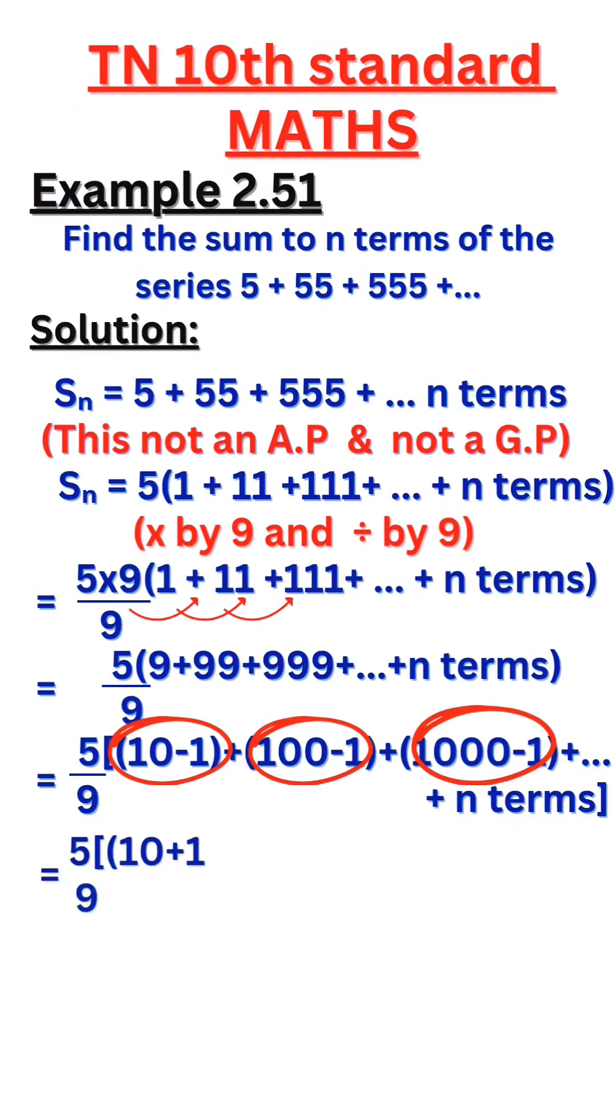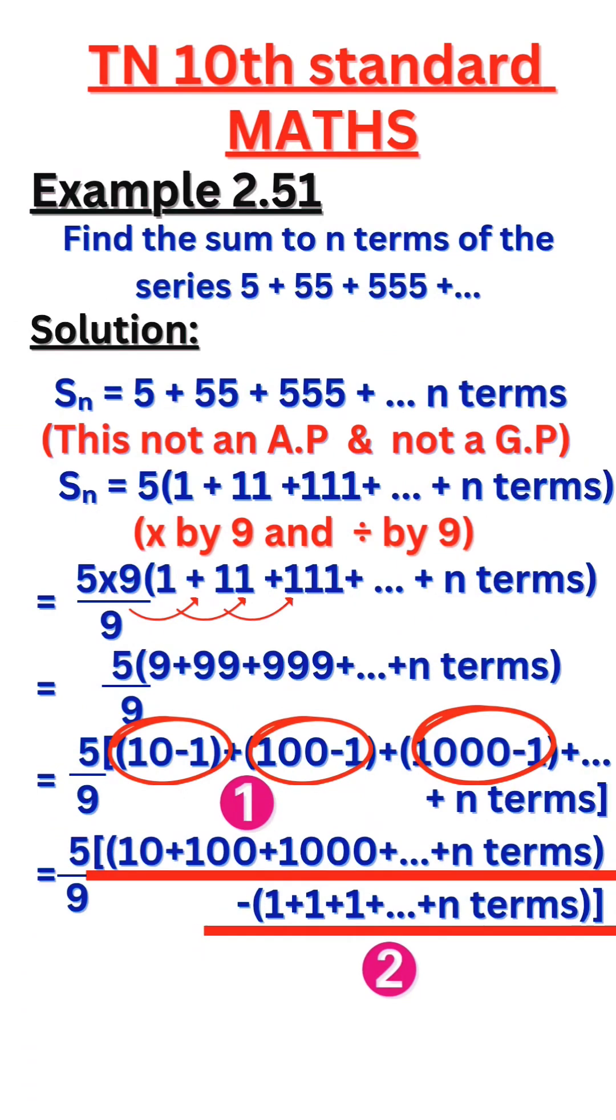Now we get 5 by 9 into 10 plus 100 plus 1000 plus dot dot dot plus n terms, minus 1 plus 1 plus 1 plus dot dot dot plus n terms. See the above underlined series are in GP. We consider the first bracket series as equation number 1. The second bracket series is second equation.